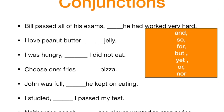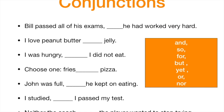Try to place one of these conjunctions — and, so, for, but, yet, or, nor — into each of these blanks to complete these sentences. Pause the video for a moment and try to work it out and see what you get.